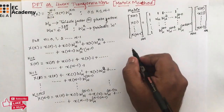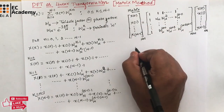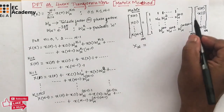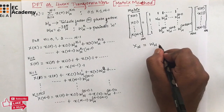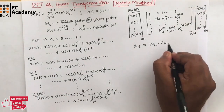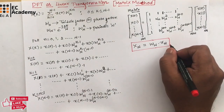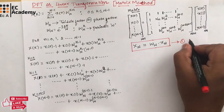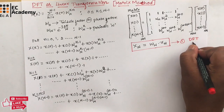Symbolically, this matrix equation can be written as X(N) = W_N · x(N), where X(N) is the DFT output vector and x(N) is the input sequence vector. Let us call this Equation 1. Using this equation, we can find the DFT of any given sequence.